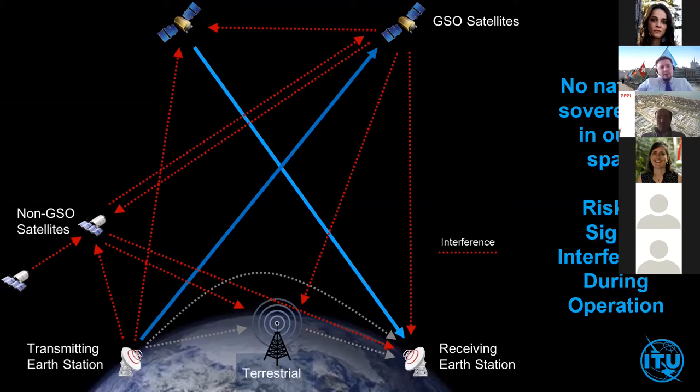The technical reason why we need these regulations is to prevent radio interference between signals of different satellites from interfering with each other, which would prevent the smooth operation and delivery of data through radio links. The main reason is interference and the legal reason is the absence of national sovereignty.